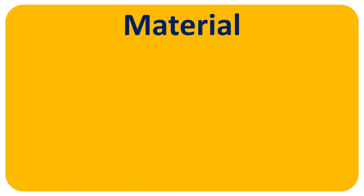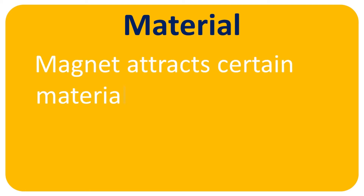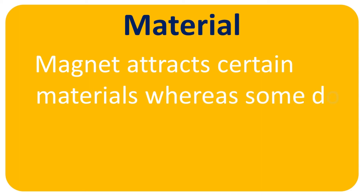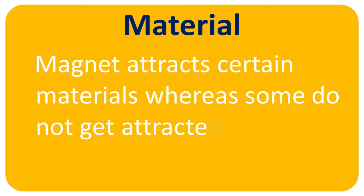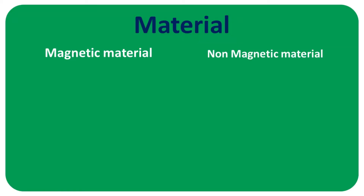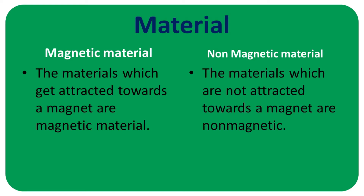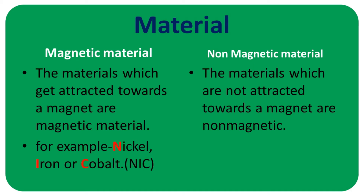There are also some materials which get attracted towards magnets and certain materials which do not. So we can categorize all materials into two types: magnetic and non-magnetic materials. The materials which get attracted towards a magnet are magnetic materials, and those which do not get attracted are non-magnetic materials. For example, nickel, iron, and cobalt are all magnetic materials.